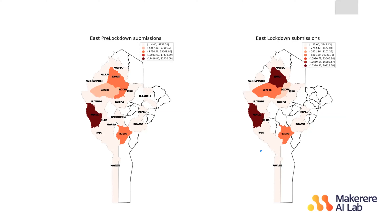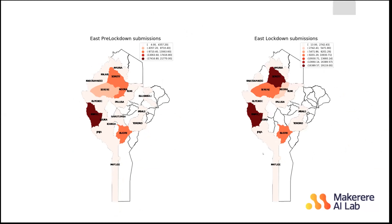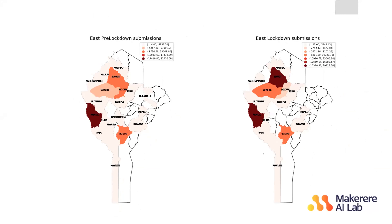In the eastern region, there was a slight increase in submissions during some periods. Katakwi, Namutumba, Bulambuli, and Iganga collected data before the lockdown but didn't submit anything during it. Ngora's contribution decreased, while SOROTI collected more data during the lockdown than before — I think since people were home, they decided to participate more. Choropleth maps can help you see all of this.